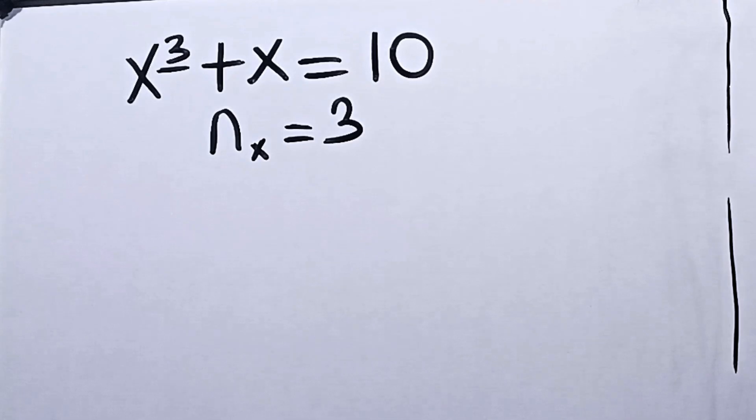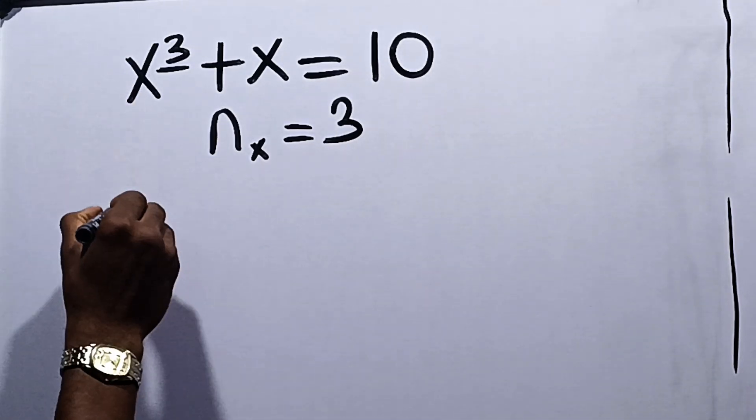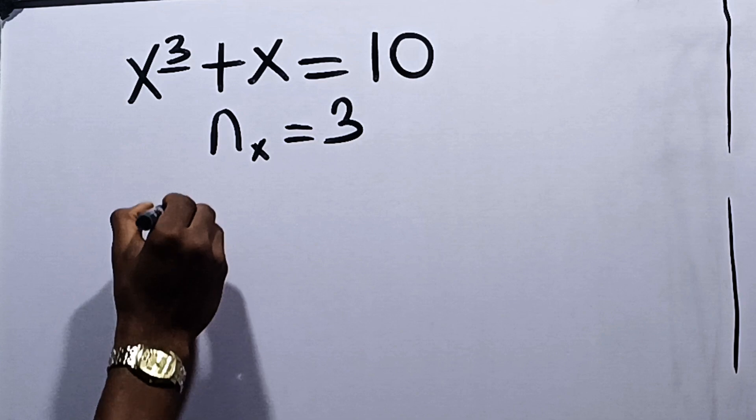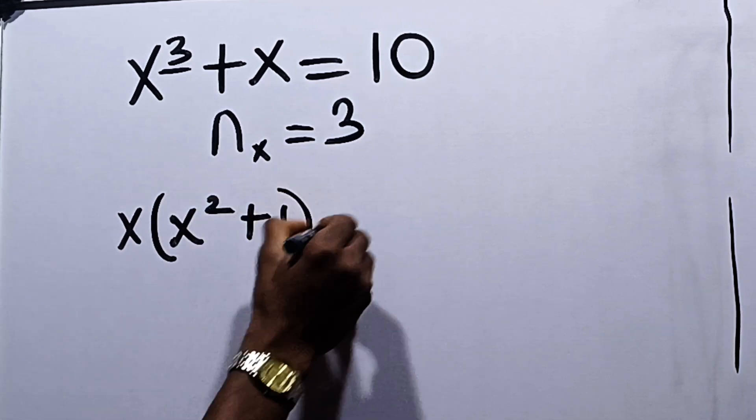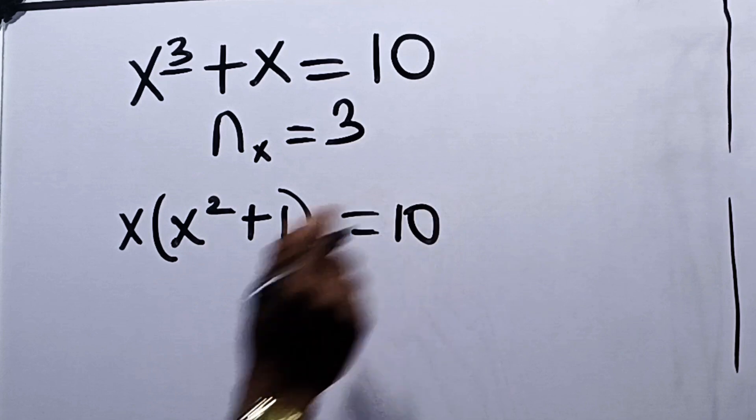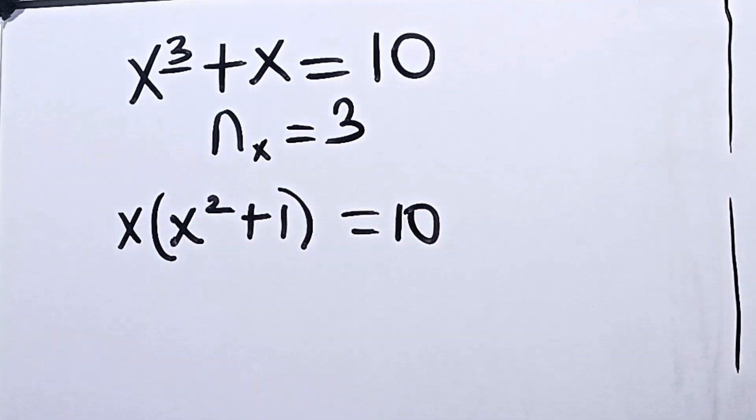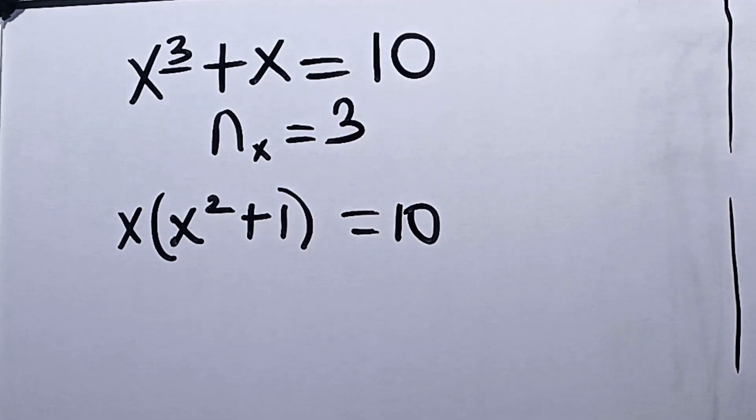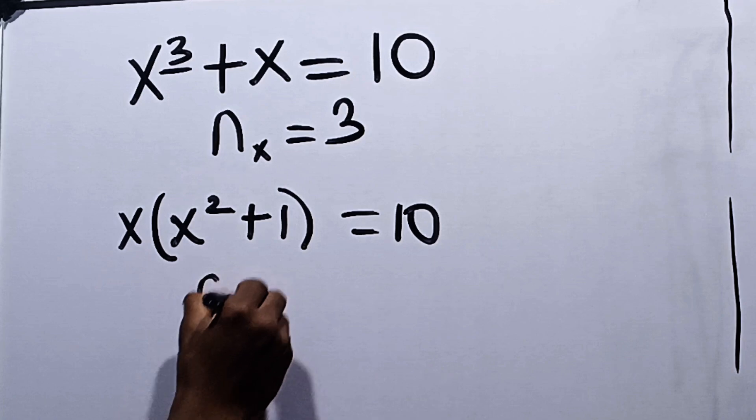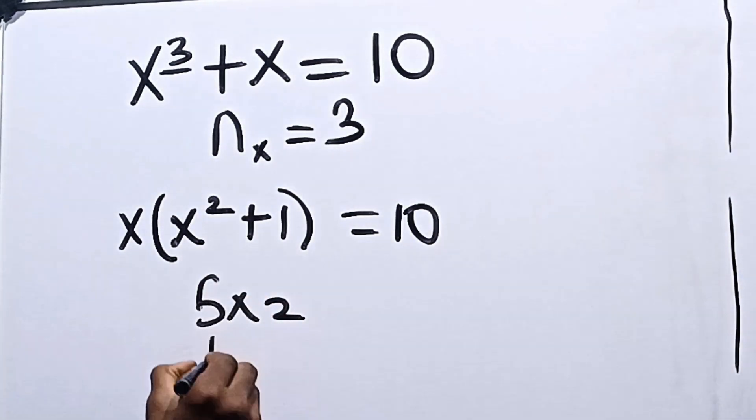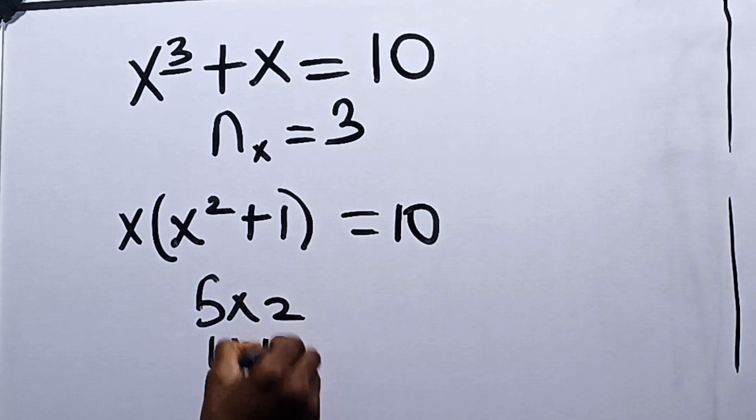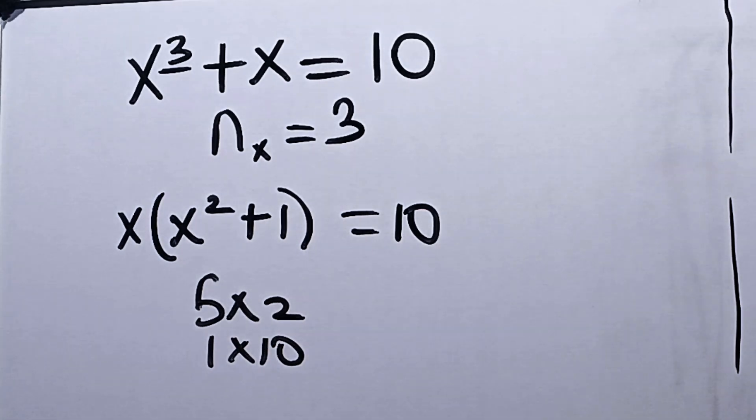In order to solve this, let's find the first answer. It's going to be easier for us to find the subsequent answers. From here, we can factor out x. So x times x squared plus 1 equals 10. Now let's list out the multiples for 10. The basic multiples for 10 are 5 times 2, and 1 times 10. These are the two main multiples for 10.